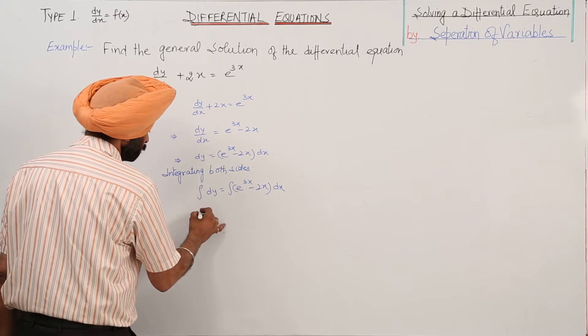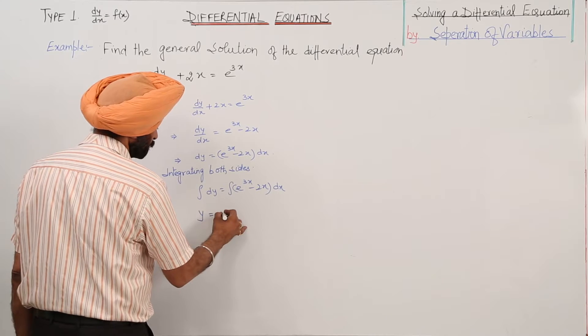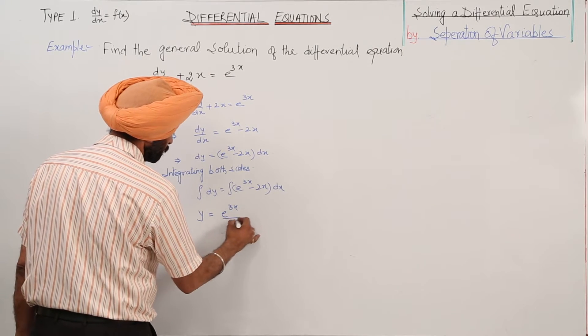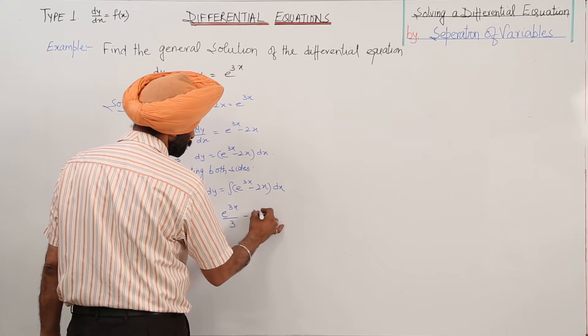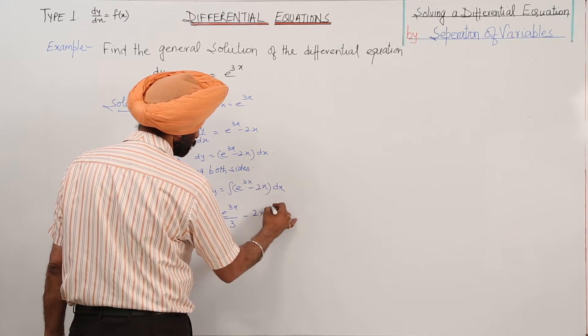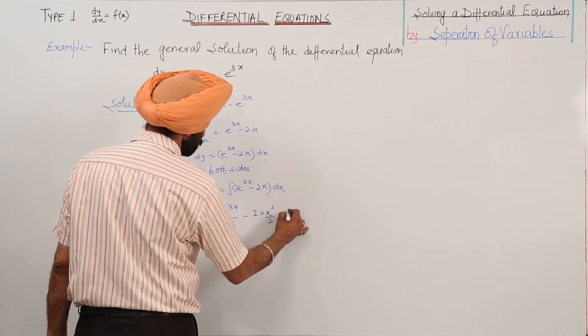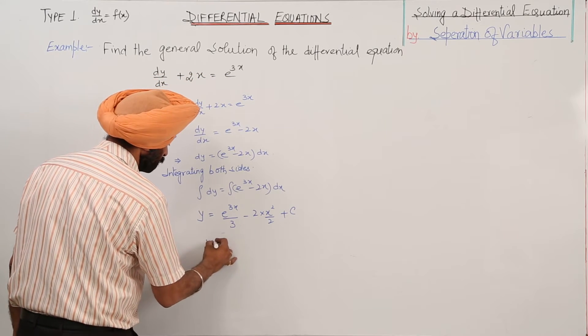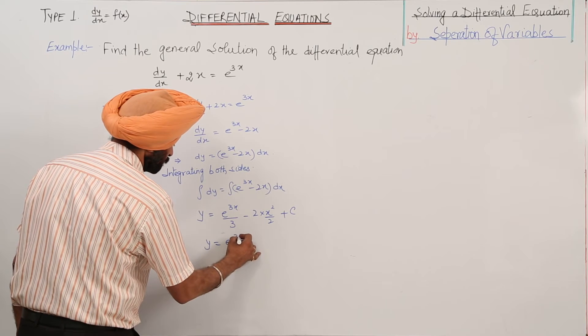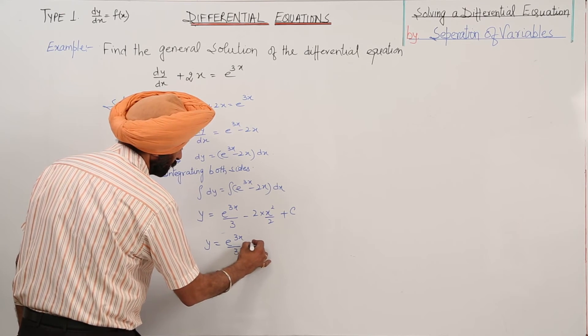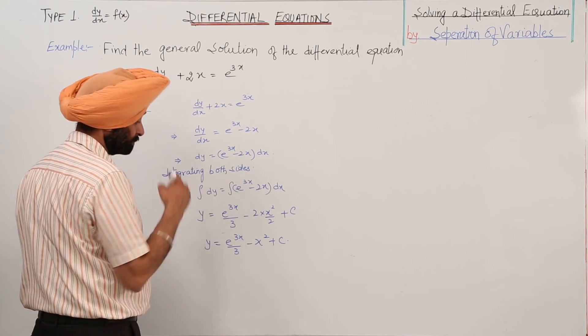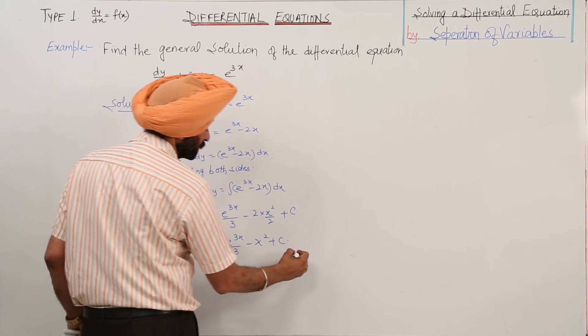Now, this becomes y is equal to e raise to power 3x upon 3 minus 2 times x square upon 2 plus c. Or y is equal to e raise to power 3x upon 3 minus x square plus c. So, this is the answer.